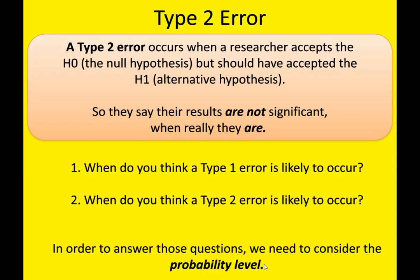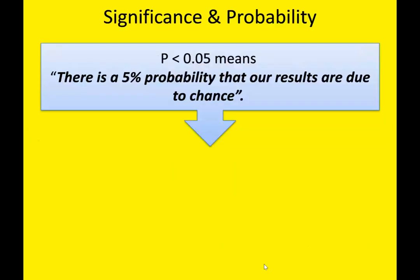So when do you think a Type 1 error is likely to occur, and when do you think a Type 2 error is likely to occur? In order to answer both of those questions, you need to consider the probability levels. In psychology, our go-to probability level is p < 0.05. Sometimes we say p < 0.05, sometimes p = 0.05, sometimes p ≤ 0.05 — it all means the same in psychology. What it means is there is a 5% probability that our results are due to chance.